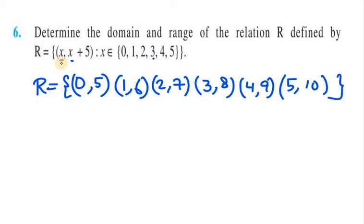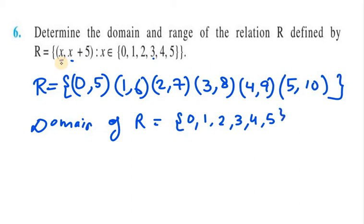Now we need to write the domain. Domain of R. So domain of R in this case will be the first element of the ordered pairs. So {0, 1, 2, 3, 4, 5}.